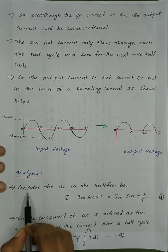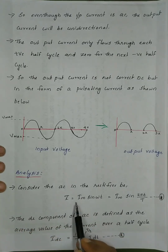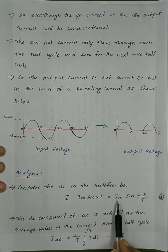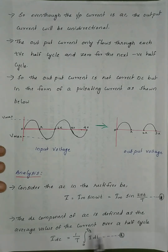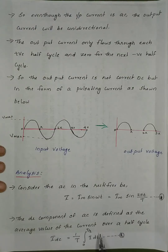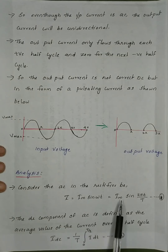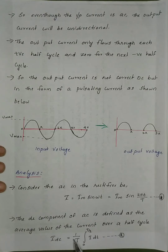Analysis: Consider the AC in the rectifier. The input current is VI equal to Im sin(ωt), which is equal to Im sin(2πt/T). The DC component of AC is defined as the average value of the current over a half cycle. IDC is equal to 1/T integral from 0 to T/2 of i dt.